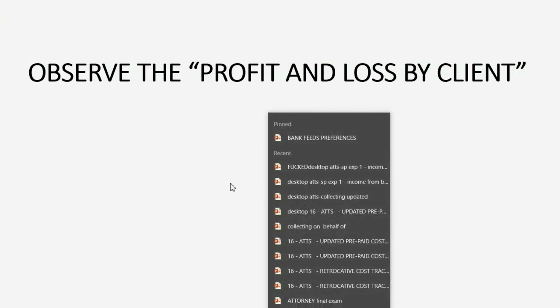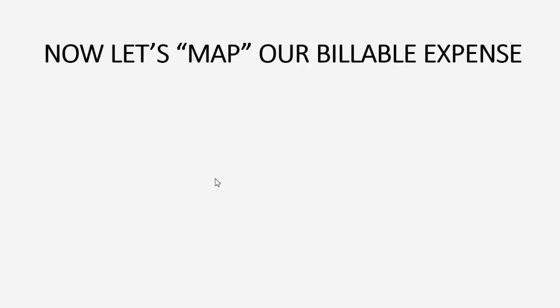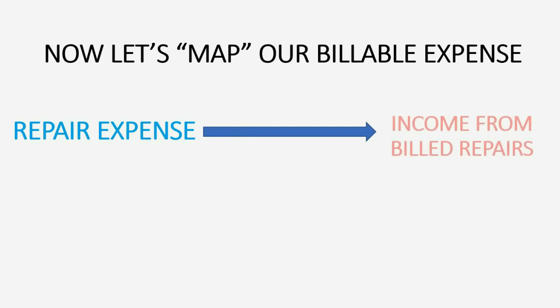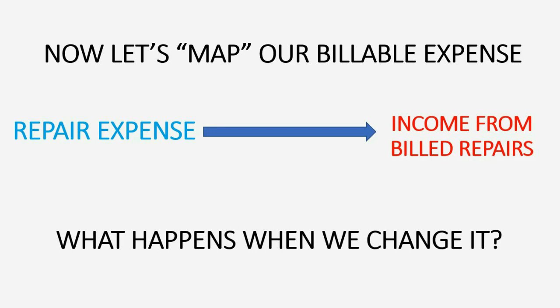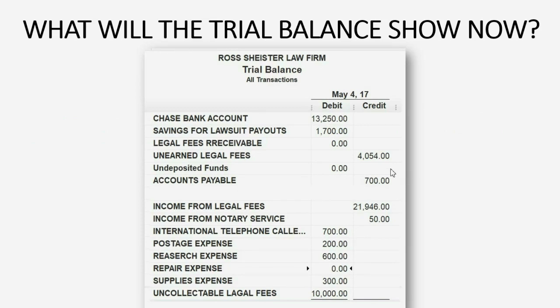At the moment we map our billable expenses, you will see the change. We're going to map repair expense to a new account called 'Income from Billed Repairs.' When we change this mapping, repair expense will come back, because QuickBooks now knows it should not take the money out of the expense — QuickBooks now knows that this income account is where to put the money at the moment you bill the client for a billable expense.